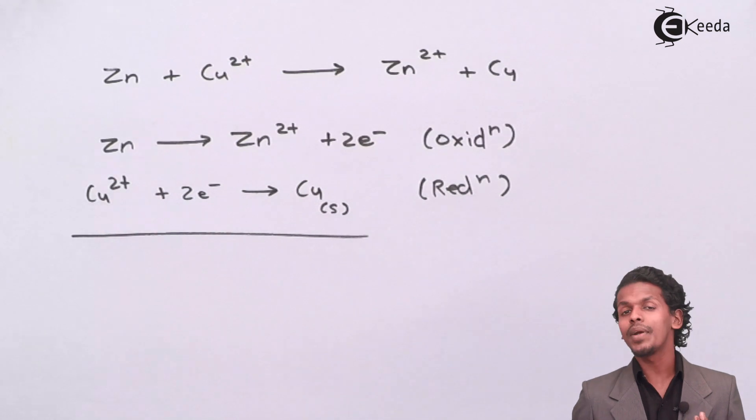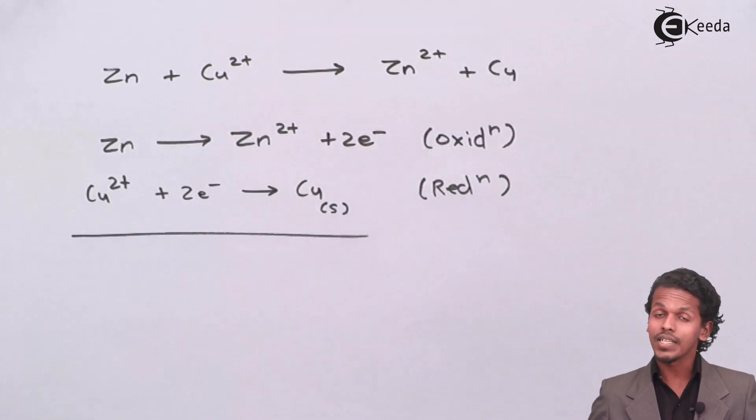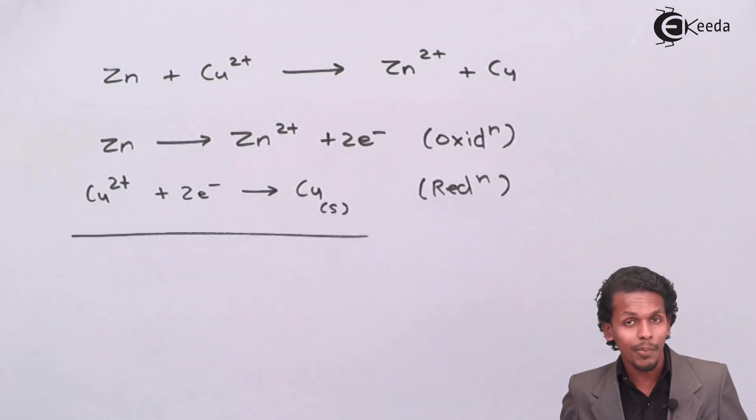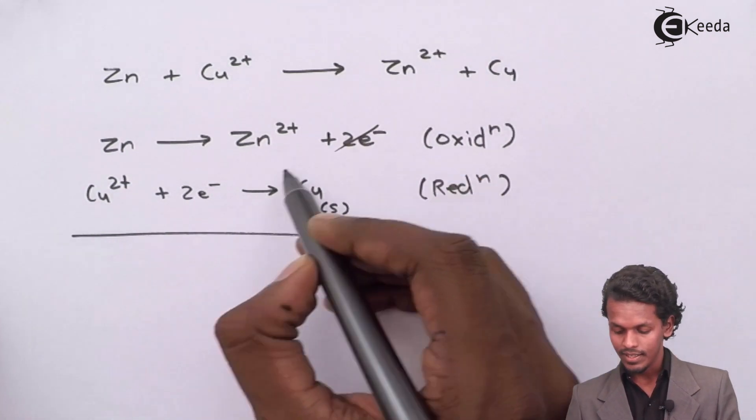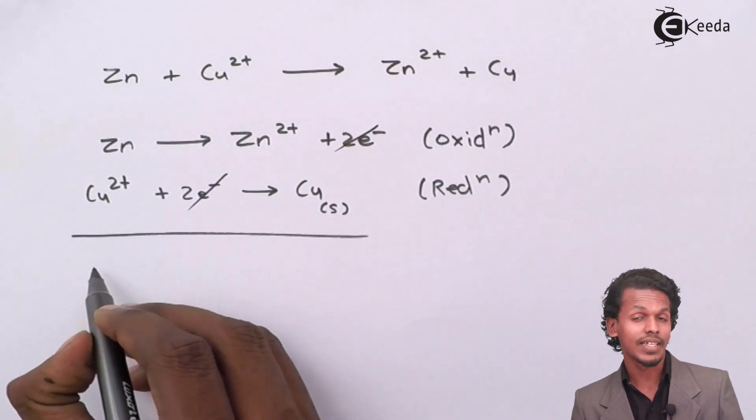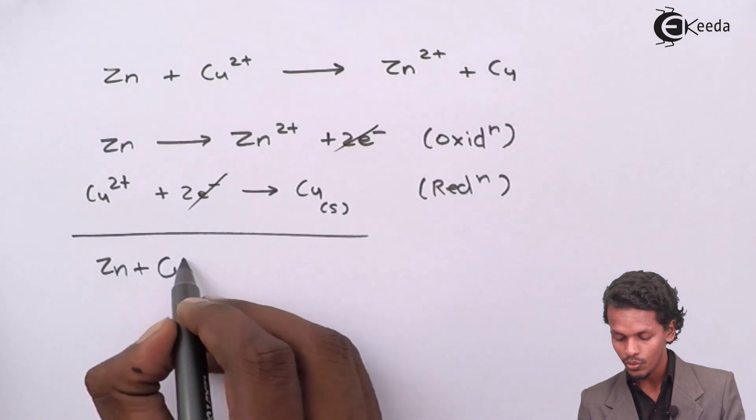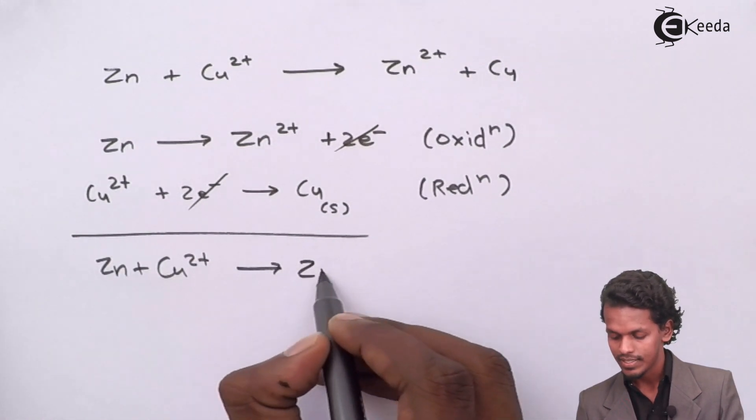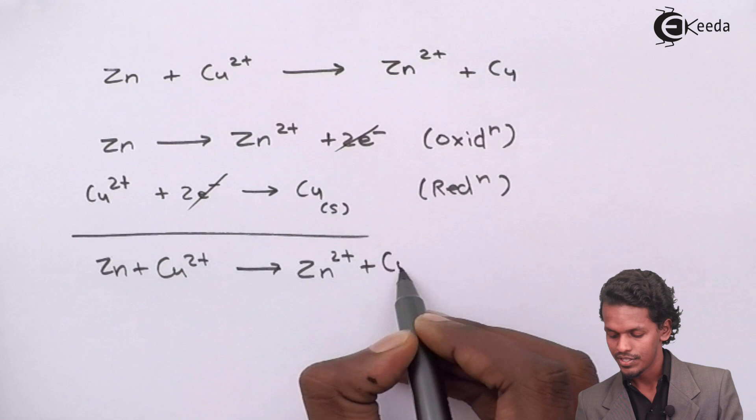If this reaction takes place simultaneously, then the overall reaction observed is: Zn + Cu2+ gives Zn2+ + Cu.